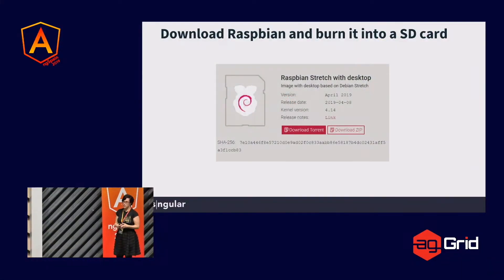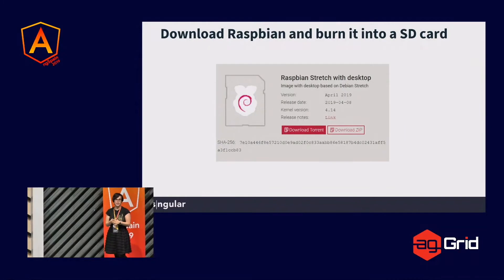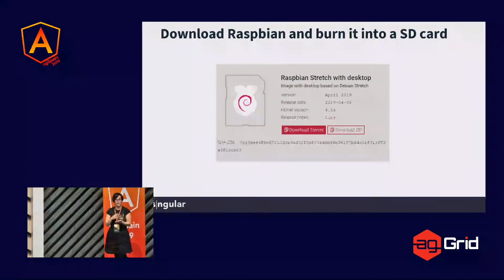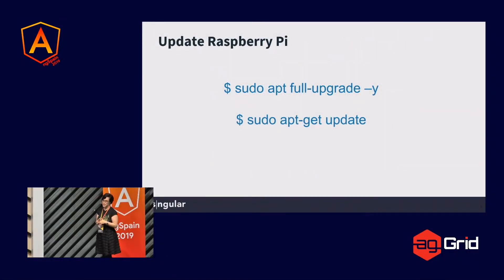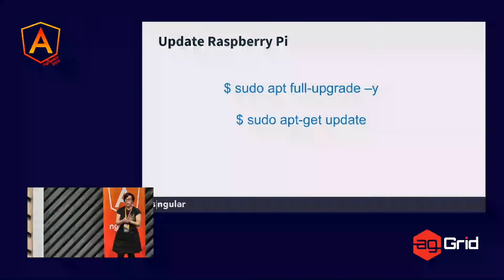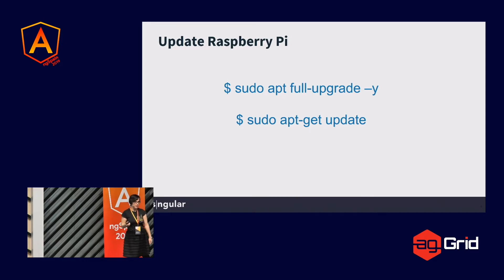And then the next step is to download the Raspberry system. It's Raspbian, which is based on Linux, and we decided to download the Stretch version with the desktop. There are three options, but for us this was the better one. We downloaded it as a zip and then copied it to an SD card. The SD card is the card that you put in the Raspberry Pi. It's very simple. And once you have the SD card on the Raspberry Pi and you connect it to a screen, you can update the Raspberry Pi. These are the commands. It's very easy. In the shell, you put the commands and you update the Raspberry Pi.